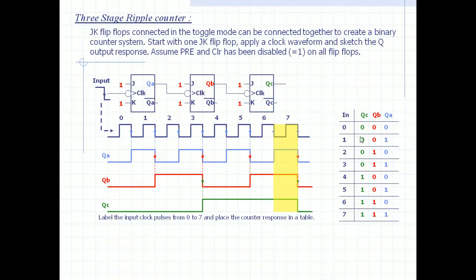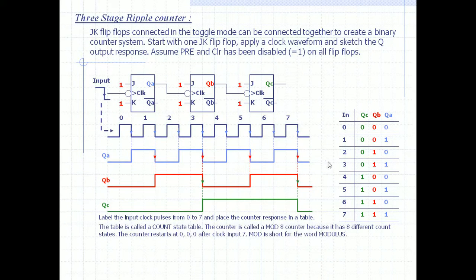This is how the counter works: zero, one, two, three, four, five, six, seven. The table is the count or state table. The counter is actually a mod-8 counter because it has eight different count states. After that, it will again go to zero zero zero. The counter restarts at zero zero zero. Mod is short for modulus - this is a modulus-8 counter.